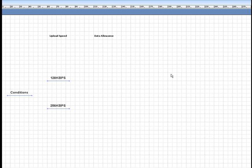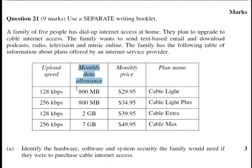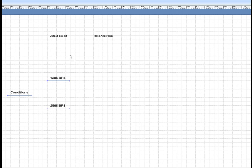The next thing we need to look at is data allowance. Going back to our table, we can see that the data allowance is either going to be 800 megabytes, 2 gigabytes, or 7 gigabytes depending on the upload speed. We have already broken them into subsections, so the 128 kbps upload speed will only have two options: either 800 megabytes or 2 gigabytes.